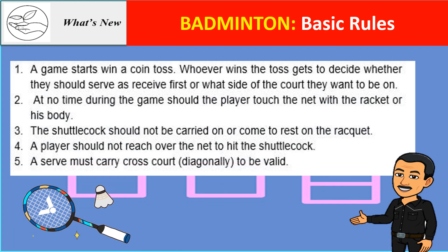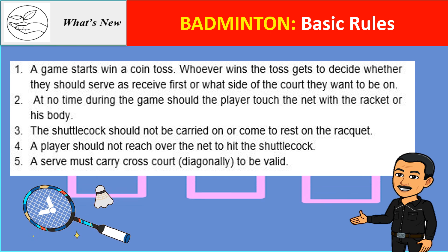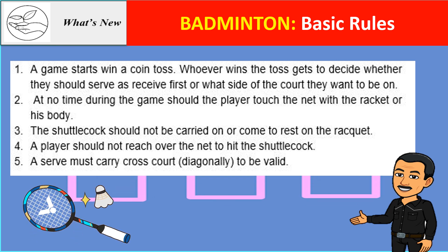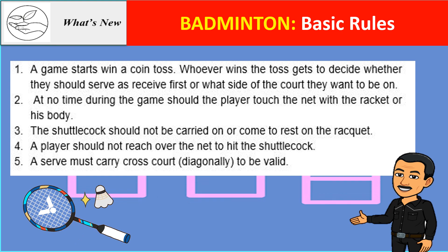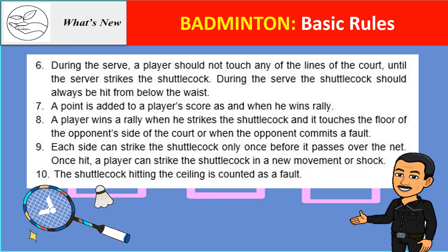Basic rules of badminton: 1. A game starts with a coin toss. Whoever wins the toss decides whether they should serve or receive first, or what side of the court they want to be on. 2. At no time during the game should the player touch the net with the racket or body. 3. The shuttlecock should not be carried on or come to rest on the racket. 4. A player should not reach over the net to hit the shuttlecock. 5. A serve must carry cross-court, diagonally, to be valid. 6. During the serve, a player should not touch any of the lines of the court until the server strikes the shuttlecock. The shuttlecock should always be hit from below the waist.